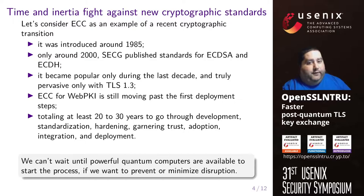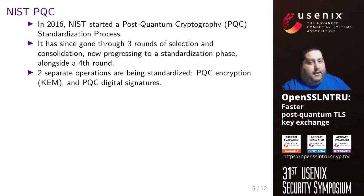So the conclusion here is that if we want to prevent or minimize disruption, we can't wait until powerful quantum computers are available to start the process. And that's why in 2016, NIST started a post-quantum cryptography standardization process. The process has since gone through three rounds of selection and consolidation, and it's now progressing to a standardization phase alongside a fourth round.